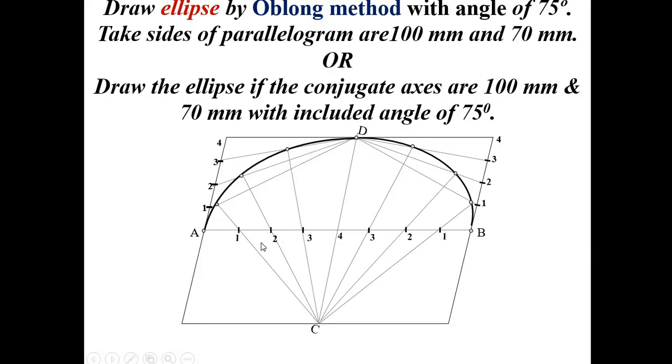For the lower portion, you can follow the same steps or use a shortcut method. Draw lines passing through points P1, P2, P3 parallel to the incline line. These are midpoints of the construction lines. Locate all points and join them with a smooth curve to complete the ellipse.